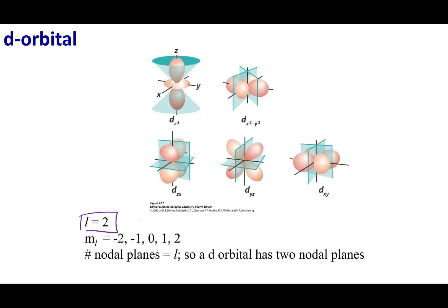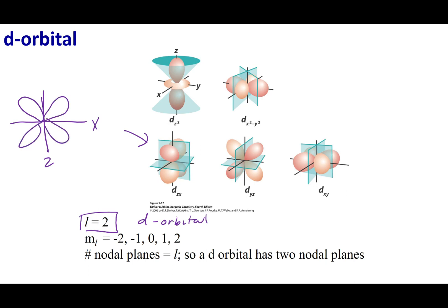If L equals 2, this is called a D orbital. There are two shapes in a D orbital. Looking at the DZX orbital, you can see in the ZX plane two dumbbells crisscrossing in a clover shape. Four of the D orbitals have this clover shape: DX squared minus Y squared, DZX, DYZ, and DXY.